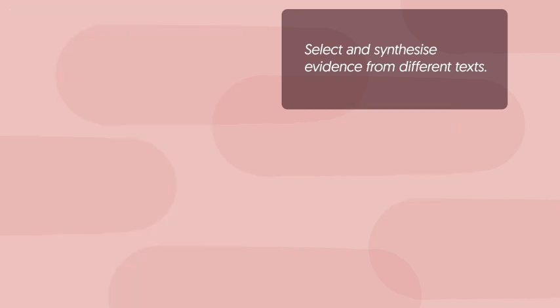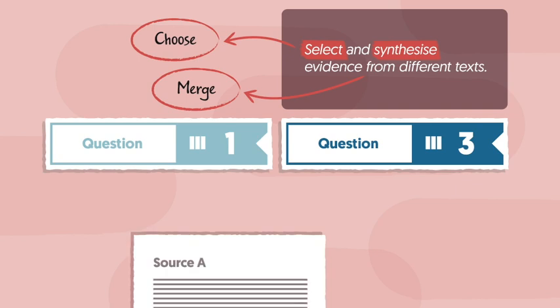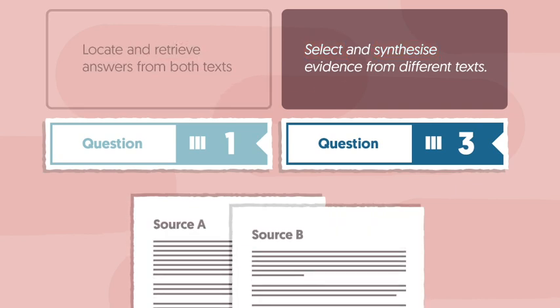To understand what's being asked of you, let's now break down the AO. Select means to choose or retrieve, and synthesise means to merge or bring together. So all you need to do is the same as for Question 1 and Question 3, but on two texts. In other words, locate and retrieve the answers from both texts.